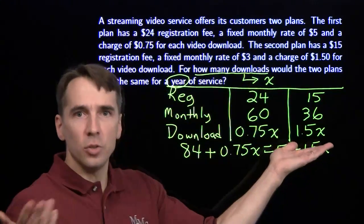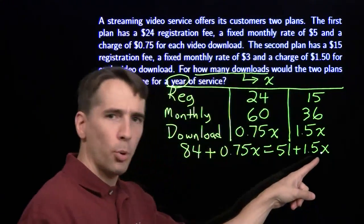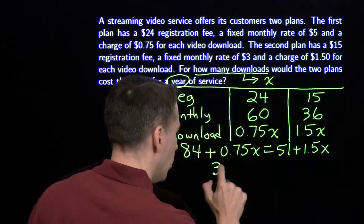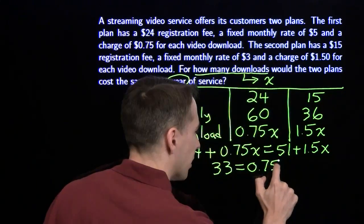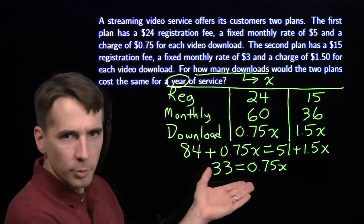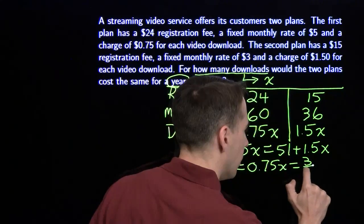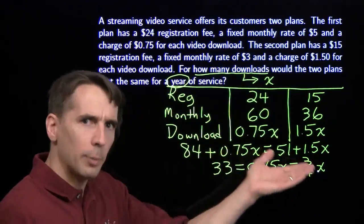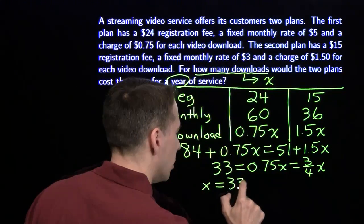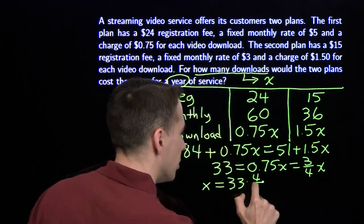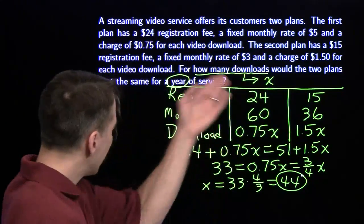Now that I have my equation, we can solve for x. Subtract 51 from both sides, subtract 0.75x from both sides, and we'll have 33 equals 0.75x. Now I'm going to jump from decimals over to fractions — I don't want to divide by 0.75. I'm perfectly happy to write this as (3/4)x and multiply both sides by 4/3, and I'll get x equals 33 times 4/3, which gives us 44 downloads for the whole year.